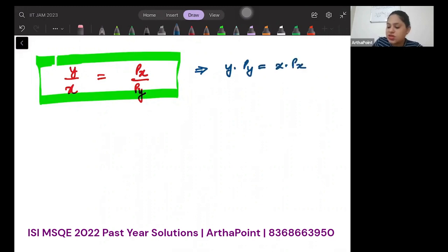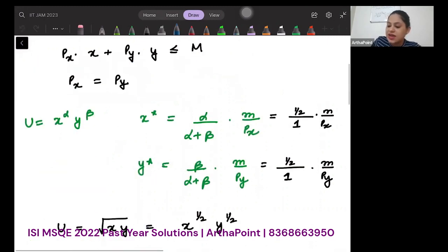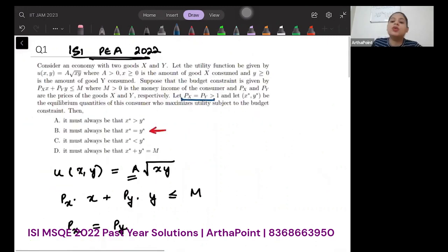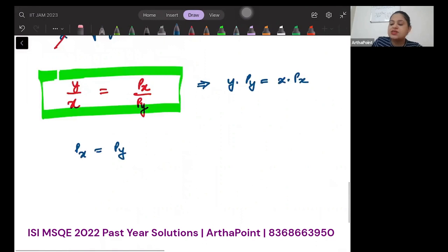But now the question says that px is equal to py. This is what is given to us. Does not matter whether both of them are equal to one or greater than one. They are equal to each other. So if they're equal, I can just say that px and py can cancel out. So if I just equate the two, I will get y* is equal to x*.